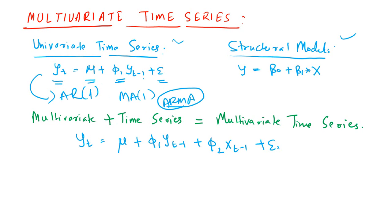ARMA models include both the lags of the time series and the error terms at the same time. And if the series is not stationary, we can take the difference of that and build what is known as the ARIMA-type model — first take the difference and then apply the ARMA class of models to it. That's all about the univariate time series analysis.